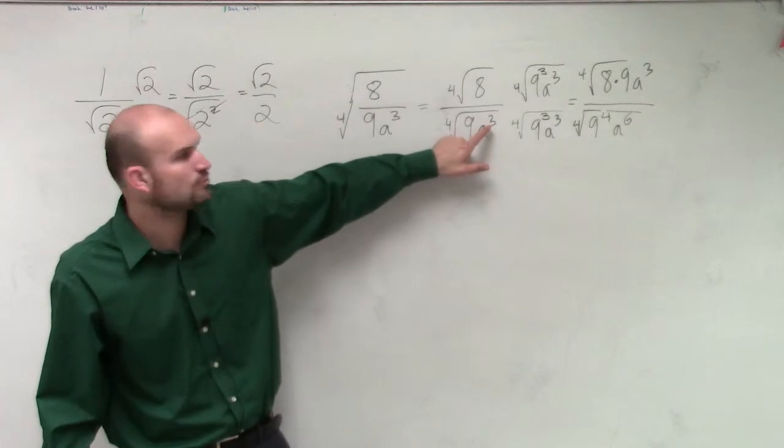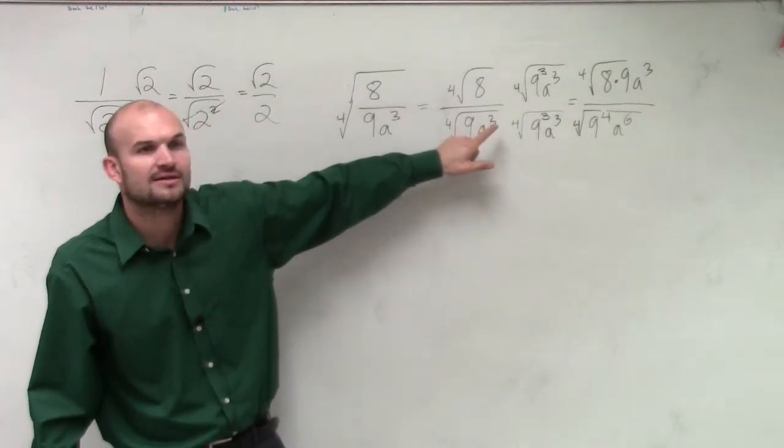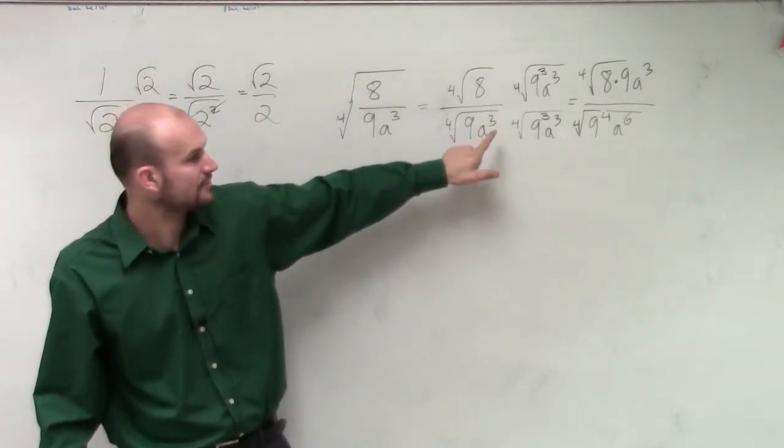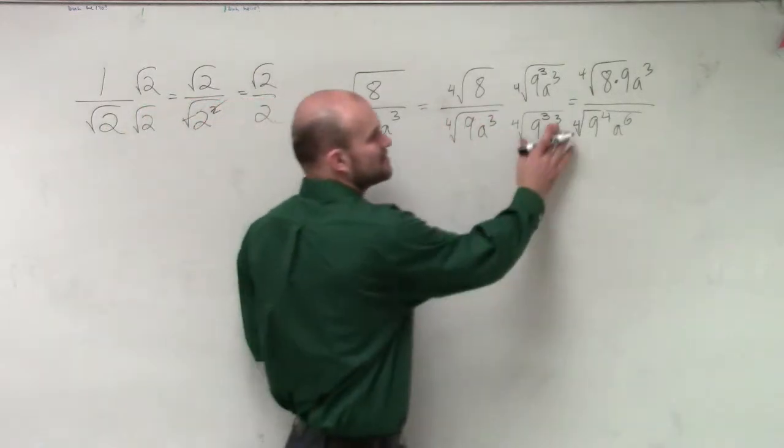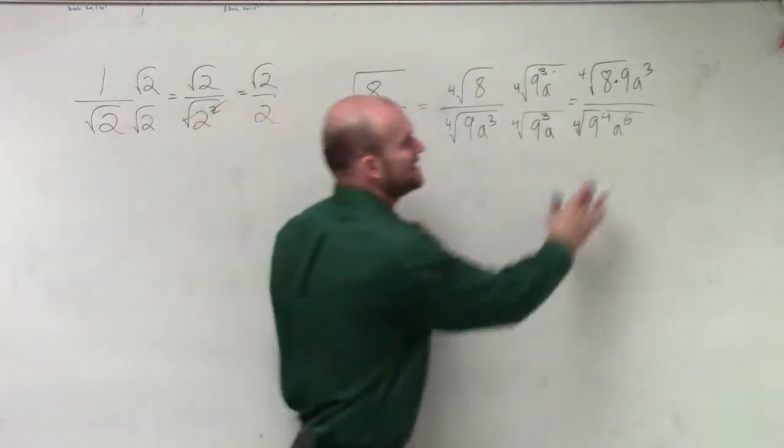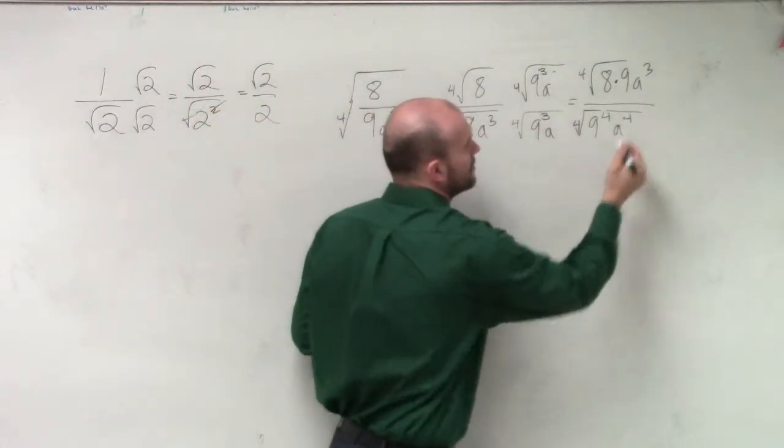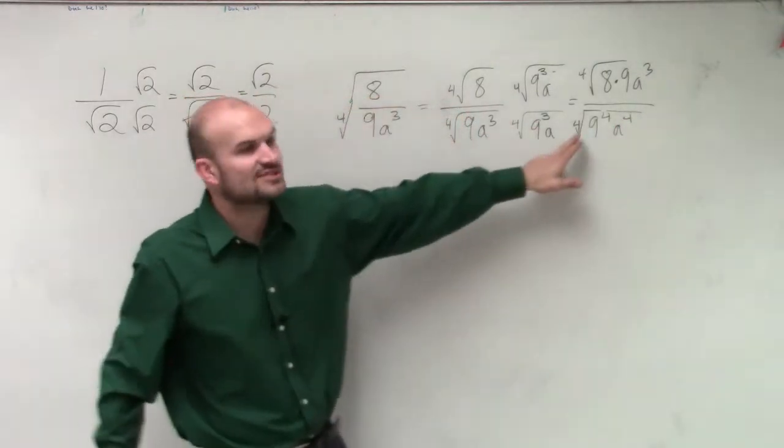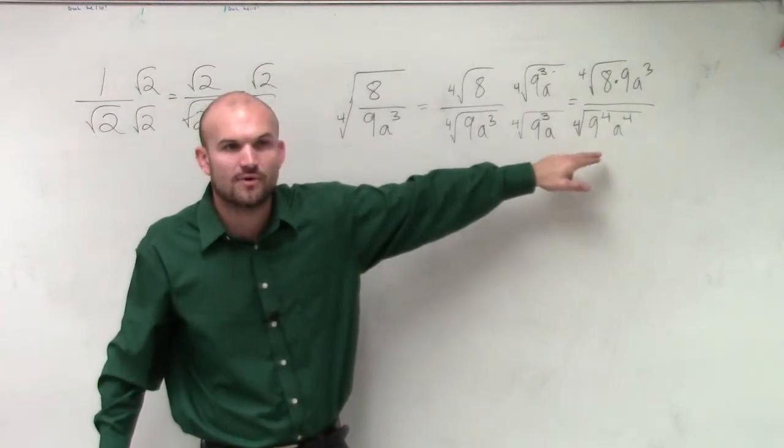So if I have a cubed, what would I want to multiply that by to give us a? a. So let's just multiply this by a, right? Because now a cubed times a gives us a to the fourth power. Can I now simplify the fourth root of a to the fourth? Yeah, of course.